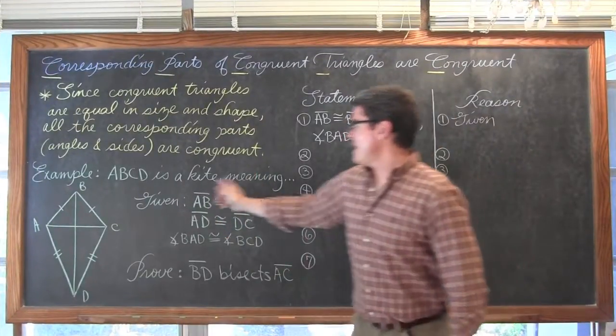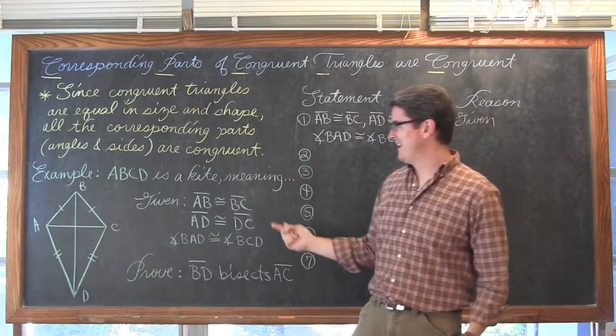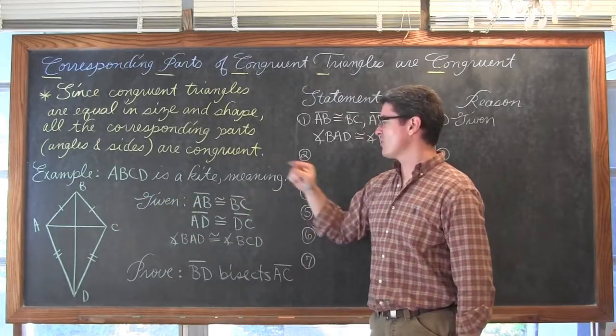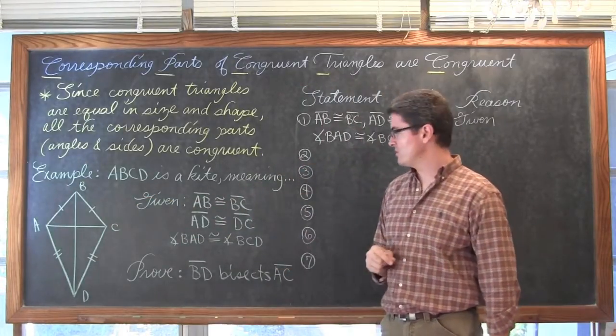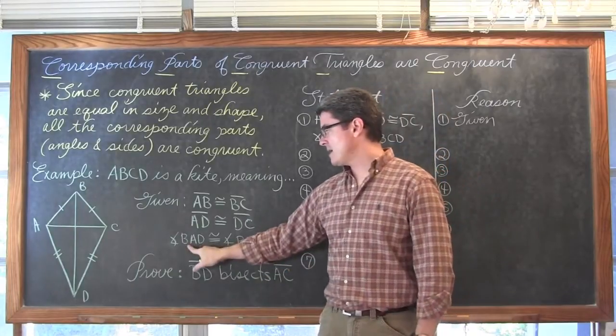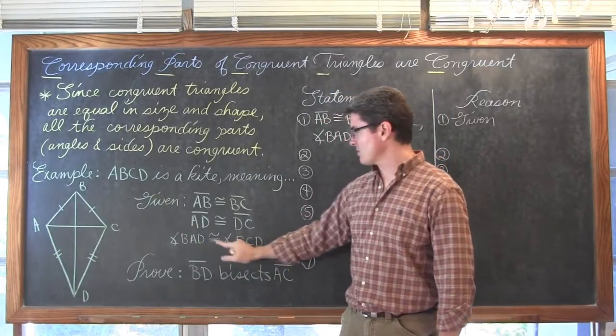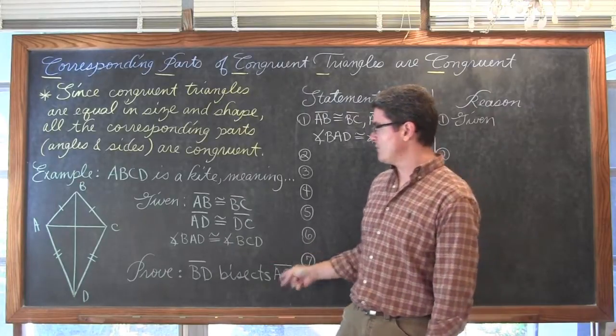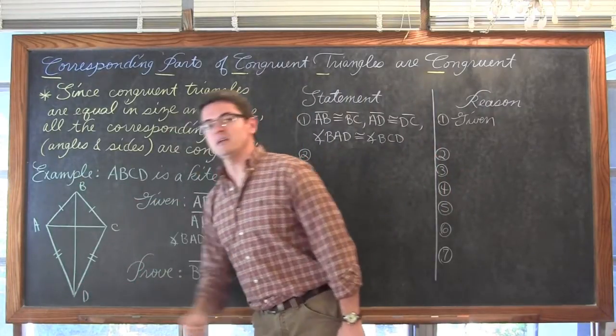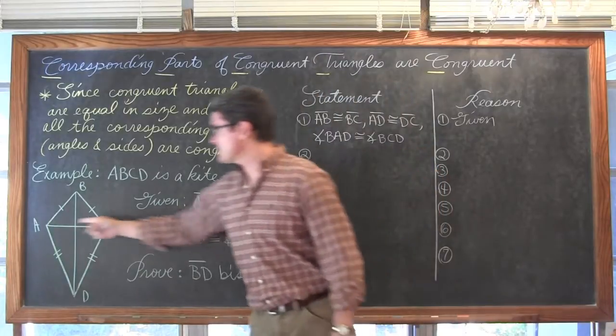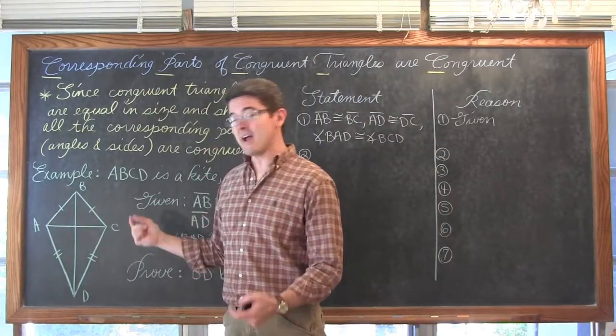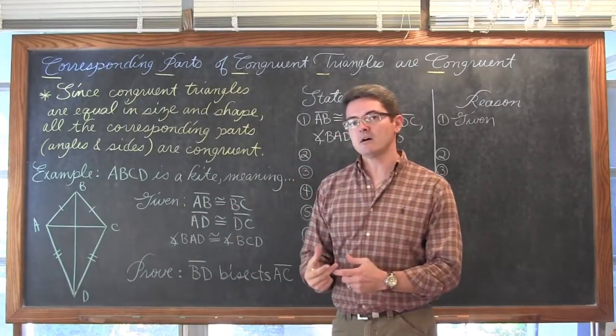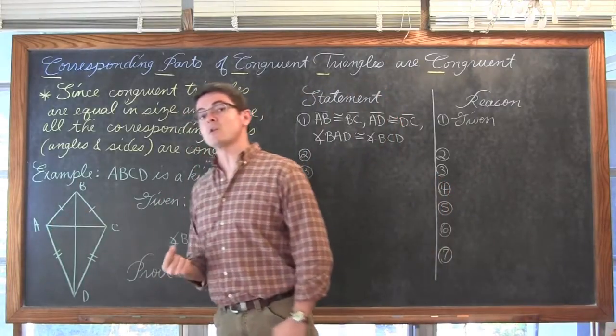Second example. ABCD is a kite. Yes, again, I have erased everything and using the same diagram. AB is again congruent to BC. AD is again congruent to DC. And the angle BAD is congruent to angle BCD. I ultimately want to prove that this line segment of BD is bisecting this segment. They are actually diagonals. When you draw lines that go through the middle of a polygon going from vertex to vertex, those are called diagonals.